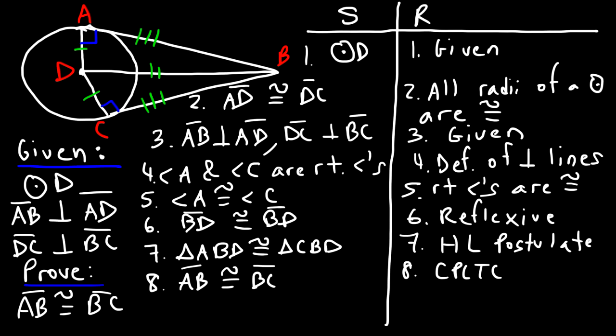Now because CD is perpendicular to BC, BC is tangent to the circle. Whenever you have two tangent lines or segments that extend from a common endpoint, those two tangent segments will be congruent. That's known as the two tangent theorem, but this is how you can prove it if you want to.